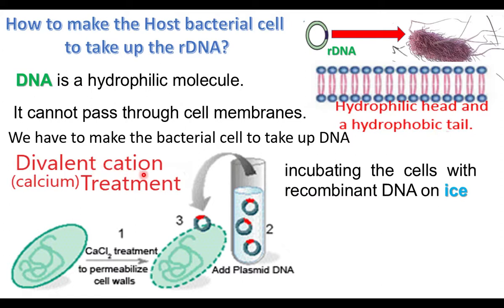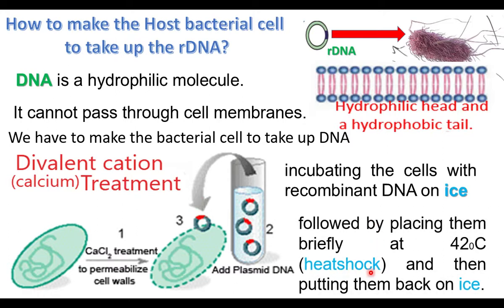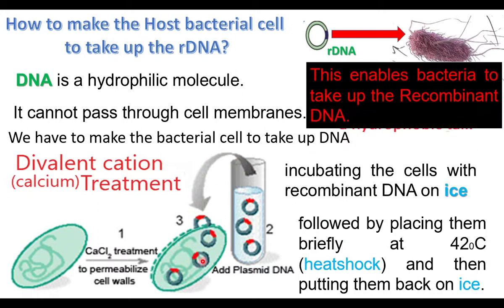The procedure is: first, divalent cation treatment; then the cells and rDNA are incubated on ice; then heat shock is given for a short time; and then they are put back on ice. This treatment makes the host cell take in the rDNA. This enables the bacteria to take up recombinant DNA.